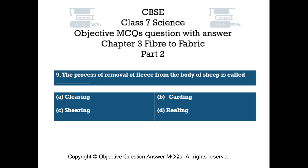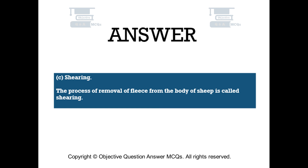Question number 9. The process of removal of fleece from the body of sheep is called — Option A: Clearing. Option B: Carding. Option C: Shearing. Option D: Reeling. The right answer is Option C — Shearing. The process of removal of fleece from the body of sheep is called shearing.